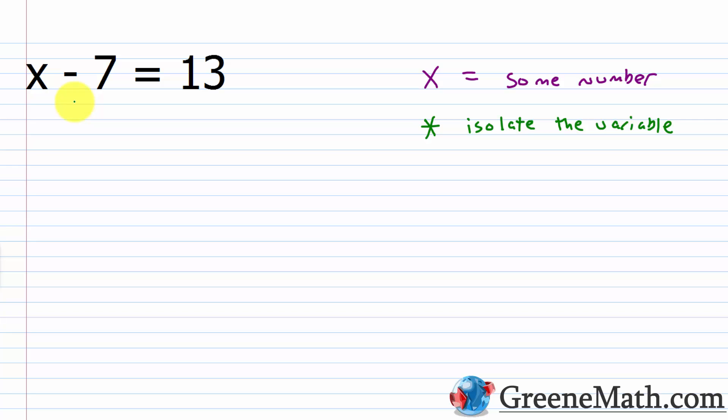So if I have something like x minus 7 equals 13, and I want to isolate the variable, I want to undo what's being done to x. If it's subtraction, I want to think about addition. If it's addition, I want to think about subtraction. If it was multiplication, I want to think about division. If it was division, I want to think about multiplication. Here I'm subtracting away 7. So to undo that, I just want to add 7 because negative 7 plus 7 gives me 0. If I had x plus 0 on this side, that's just equal to x.